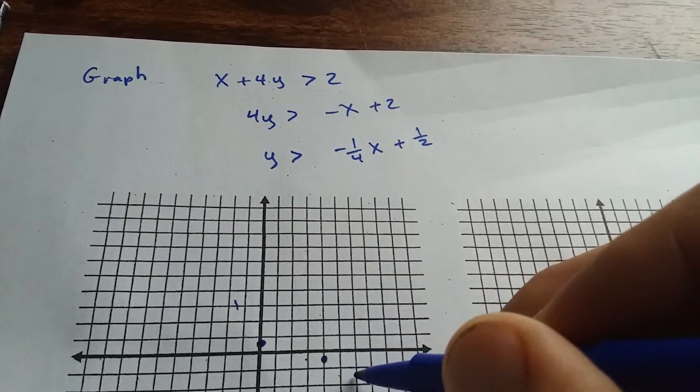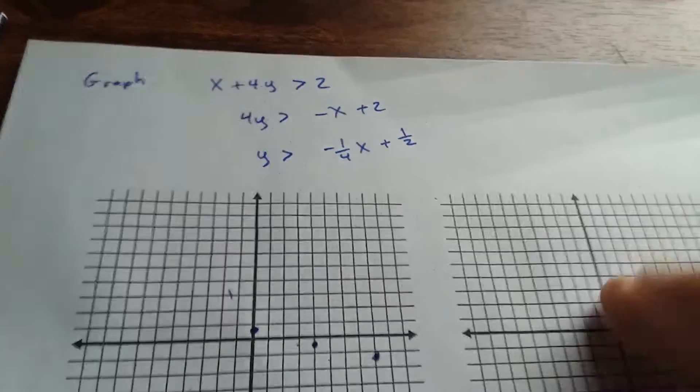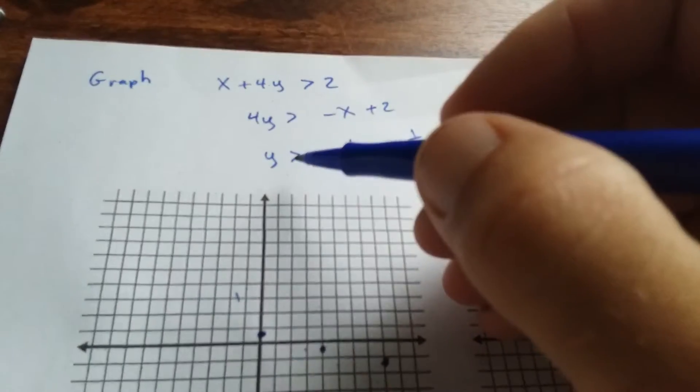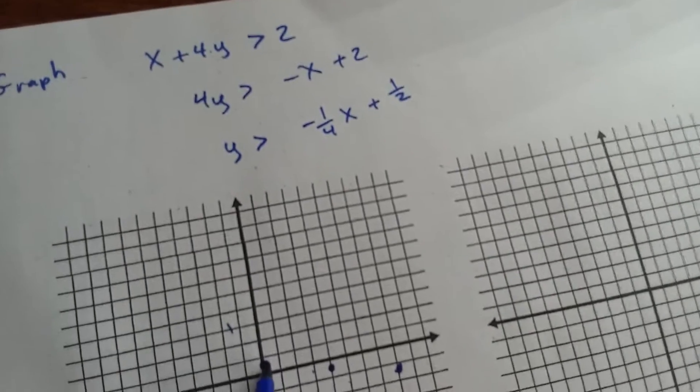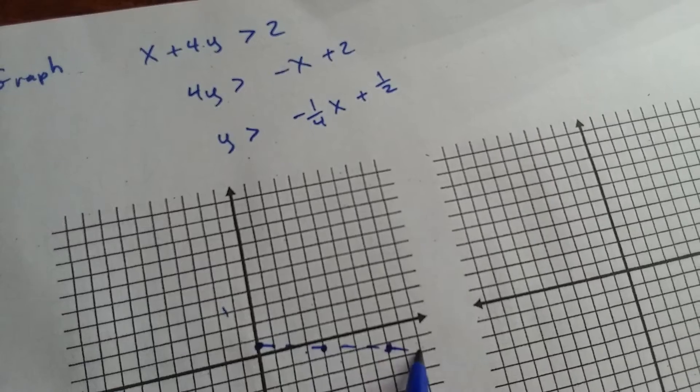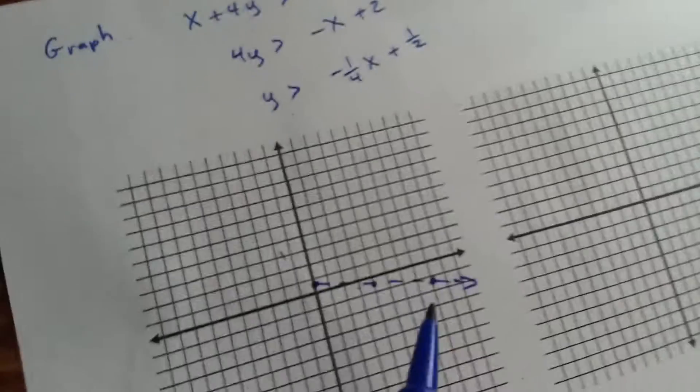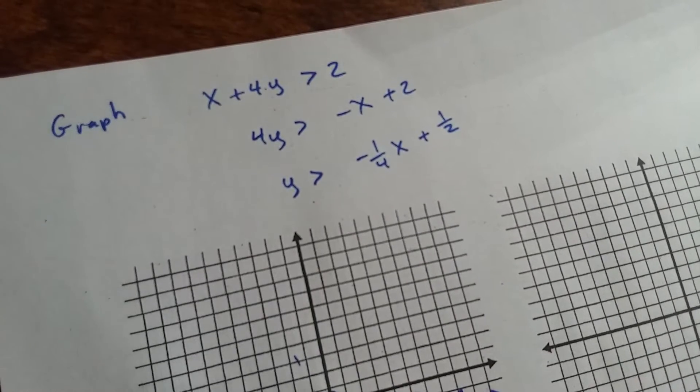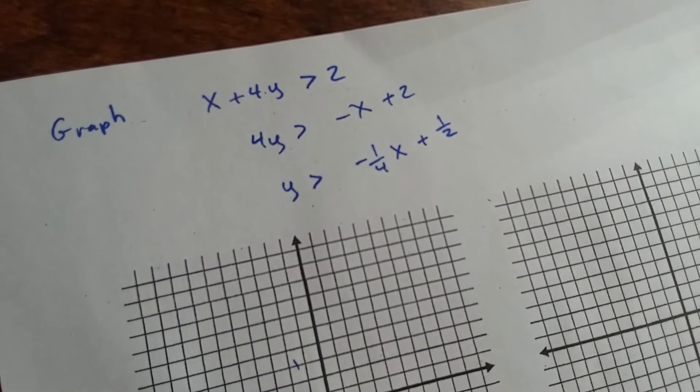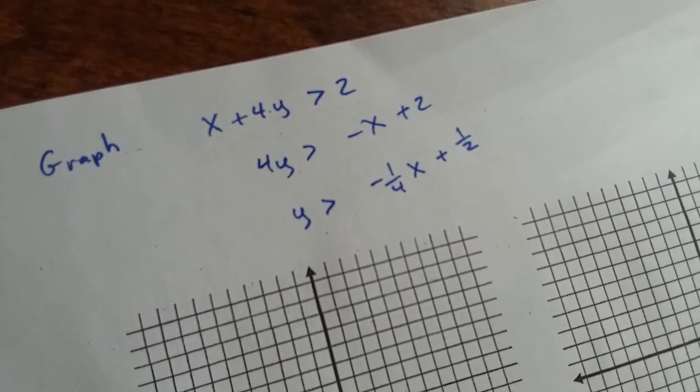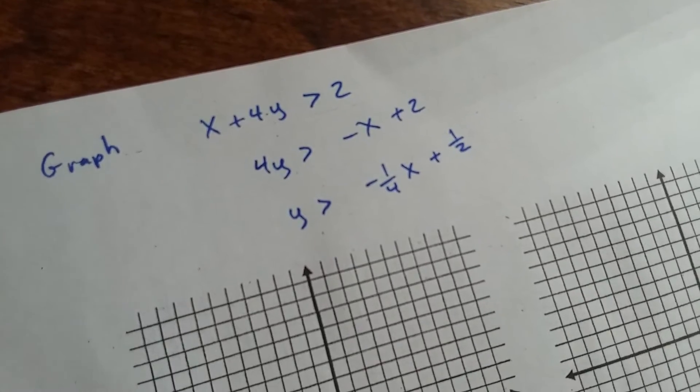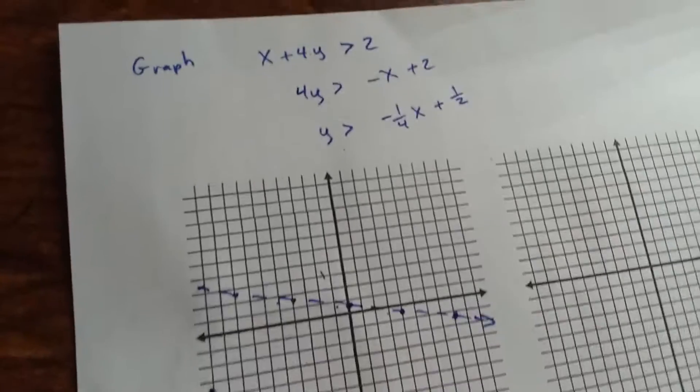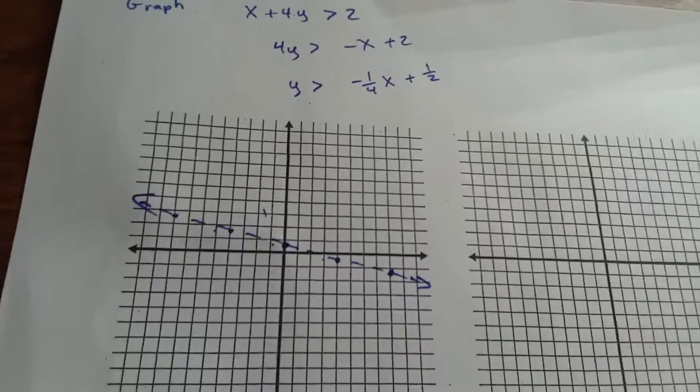1, 2, 3, 4. Okay, we do not have the equal bar, so it's going to be a dashed line. Okay, if you have a ruler, use a ruler.